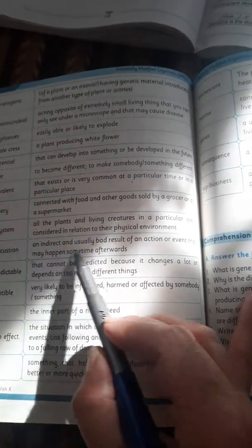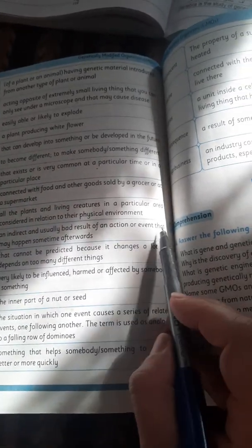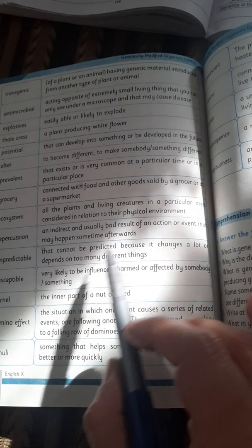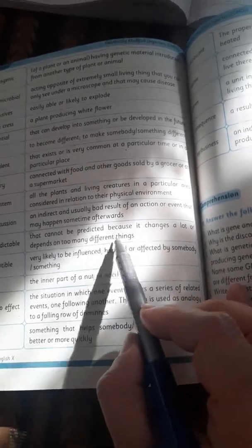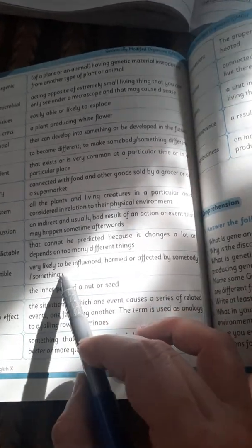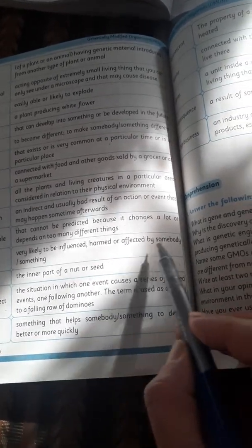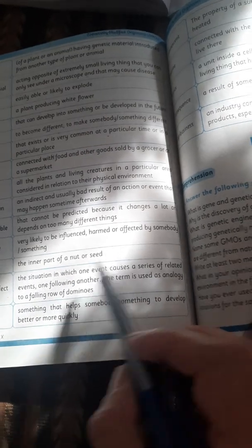Repercussion: an indirect and usually bad result of an action or event that may happen sometime afterwards. Unpredictable: that cannot be predicted because it changes a lot or depends on too many different things. Susceptible: very likely to be influenced, harmed, or affected by somebody or something. Kernel: the inner part of a nut or seed.